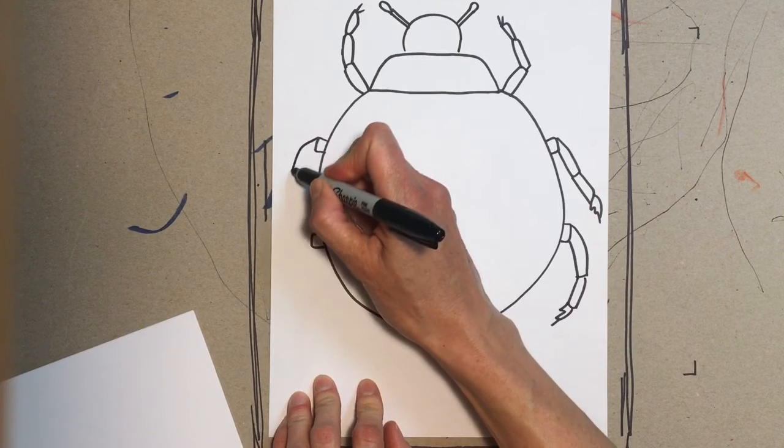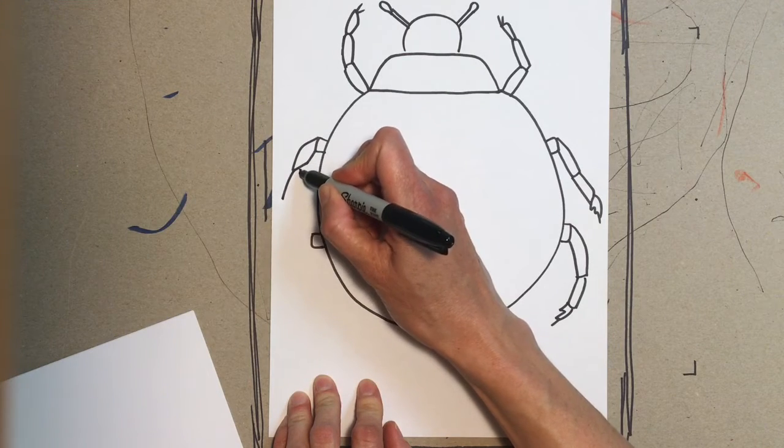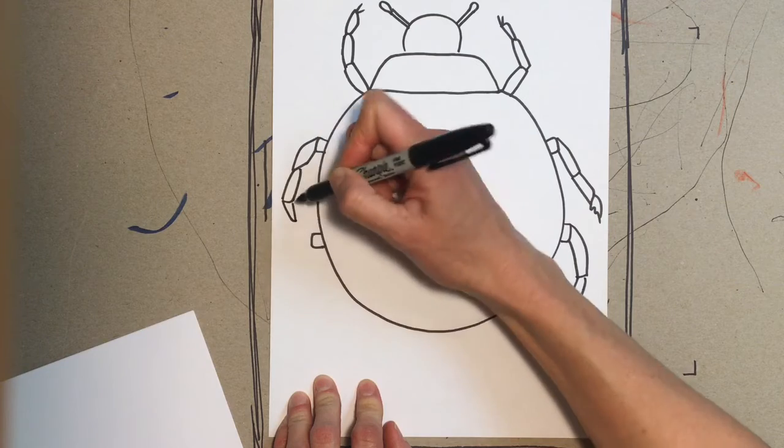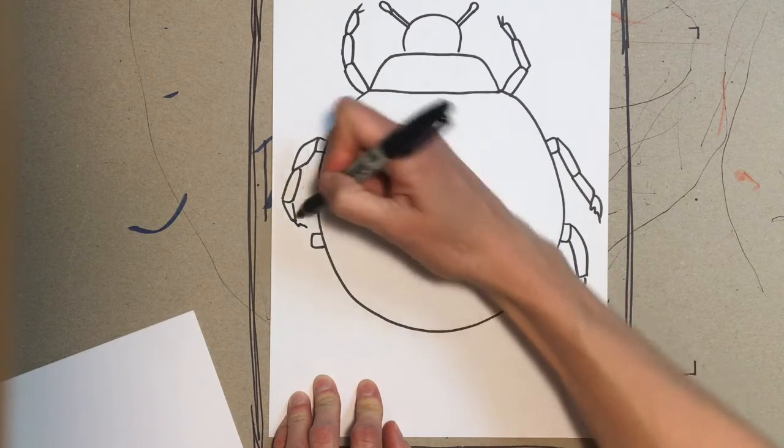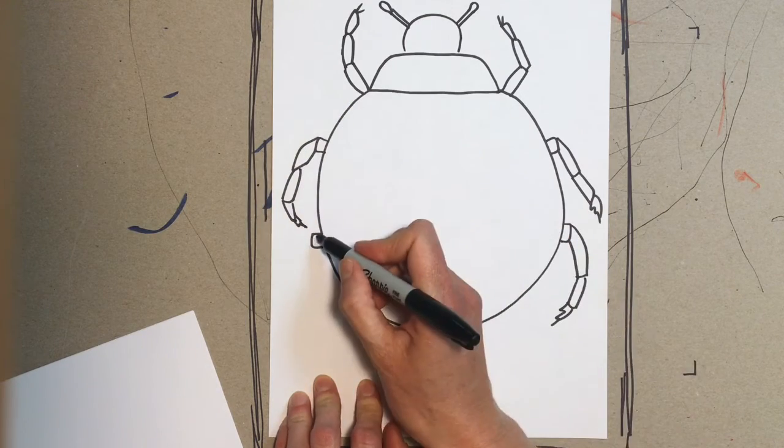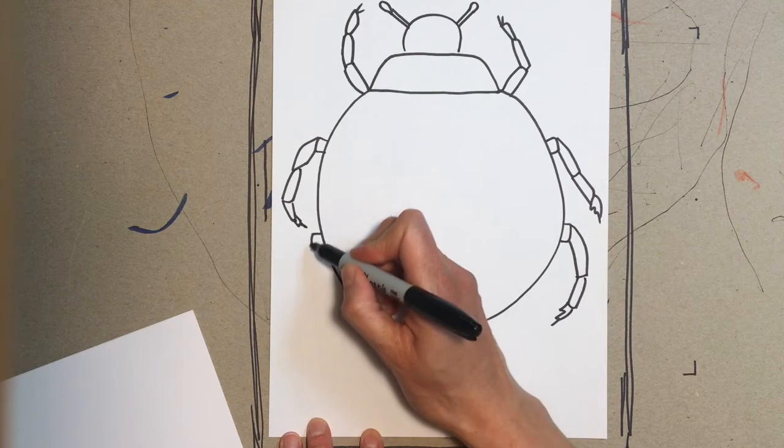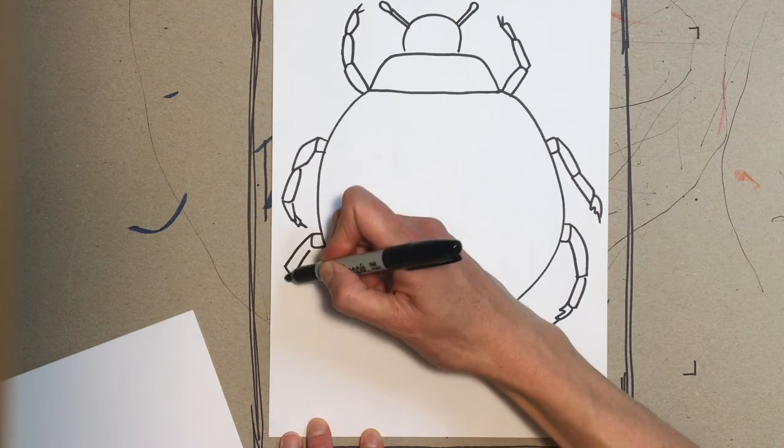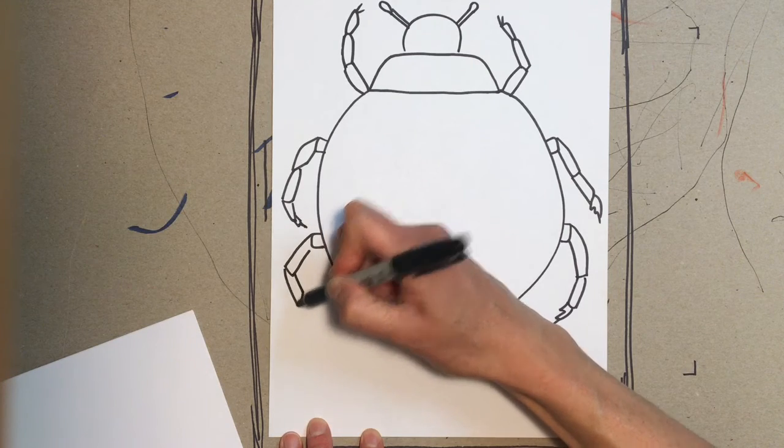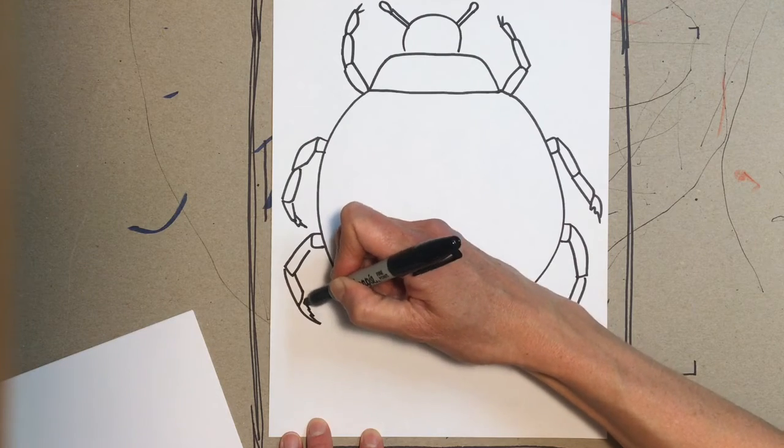And there's another rectangle and a little bit of a zigzag for a gripper. Now you're gonna divide the shell in half. Make one vertical line top to bottom, go all the way down.